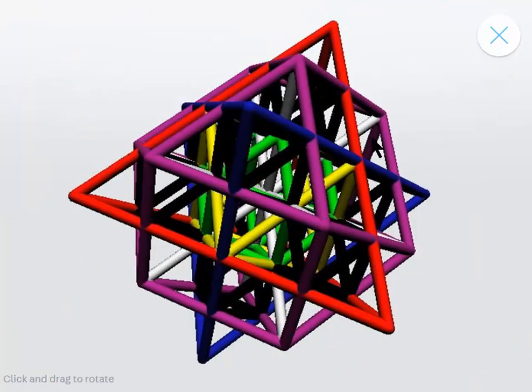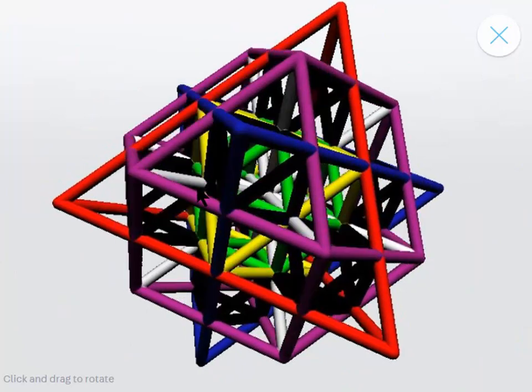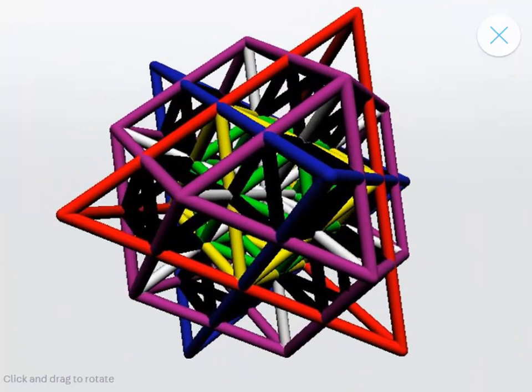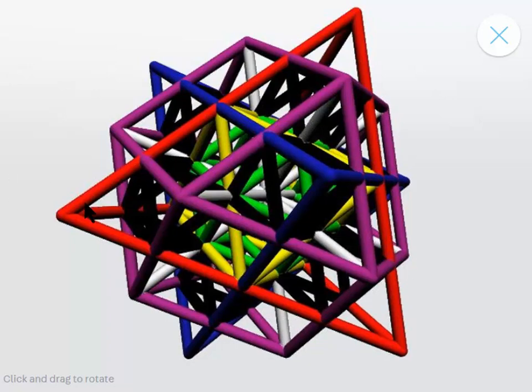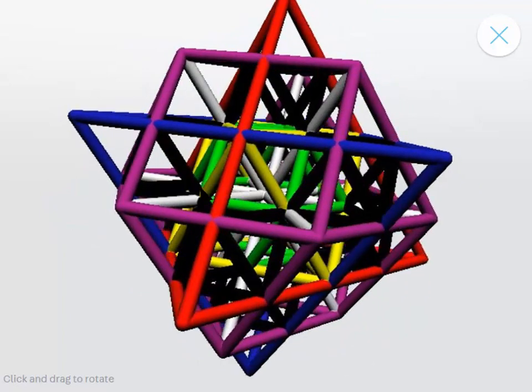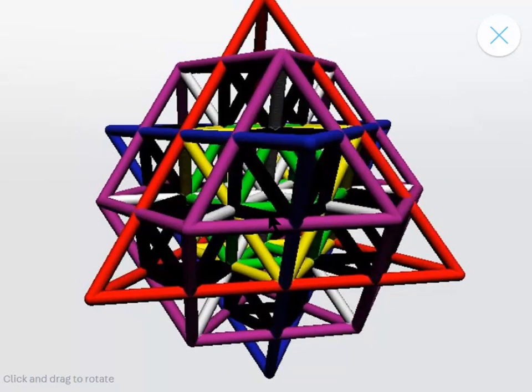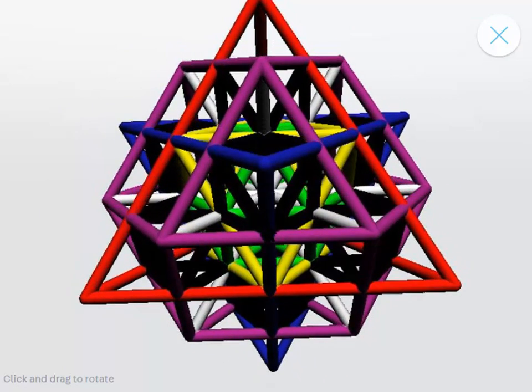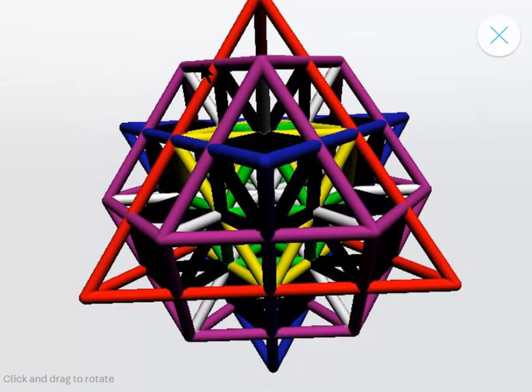I always like to have the red tetrahedron pointing upwards and the blue pointing downwards as symbolic of the basic duality of fire and water. The purple cube octahedron represents the perfect balance between forces of levitation and gravity.